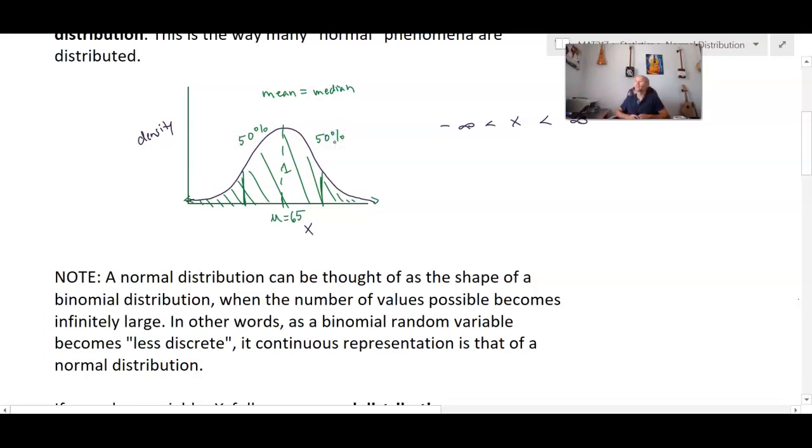Now, interestingly, there is a connection between the binomial distribution and the normal distribution. A normal distribution can be thought of as the shape of a binomial distribution when the number of values possible becomes infinitely large. In other words, as a binomial random variable becomes less discrete, its continuous representation is that of a normal distribution.